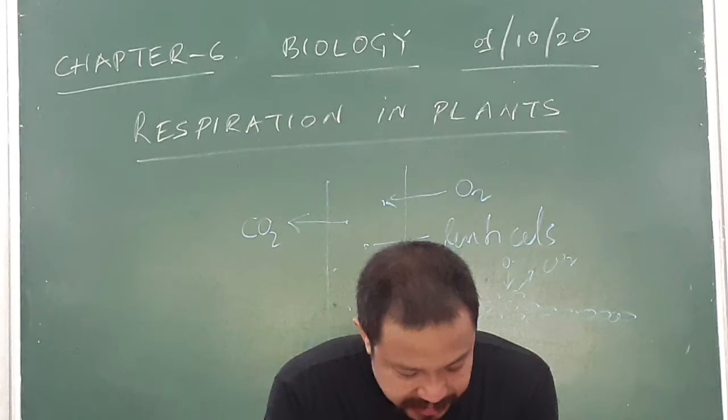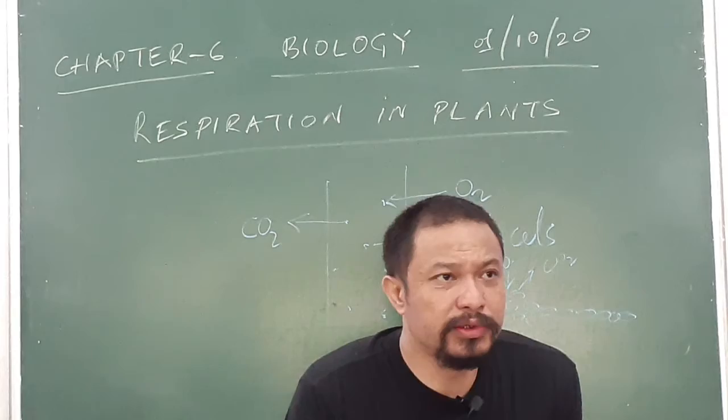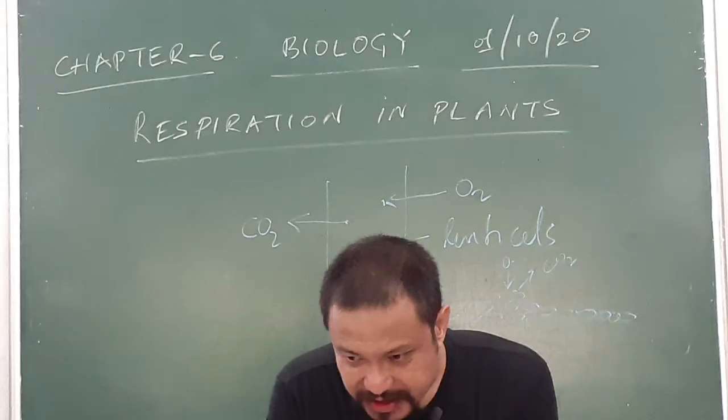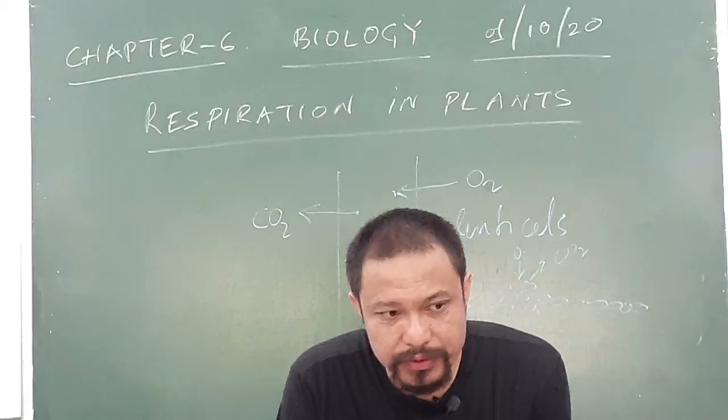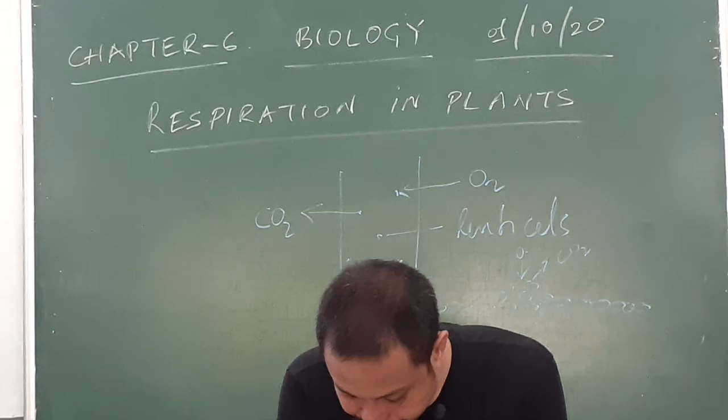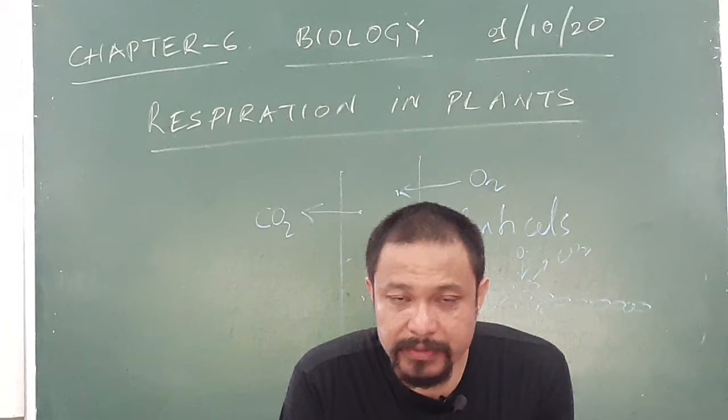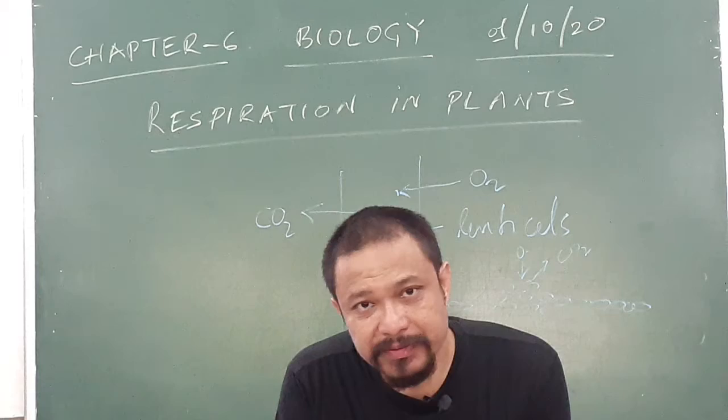Respiration also takes place through roots - not the normal common roots you see in gardens. There are many types of roots, but one of the most commonly studied roots through which respiration takes place is found in the mangroves. If you go to the mangrove areas of the Sundarbans, found in Bengal, India, you can study this type of root respiration.